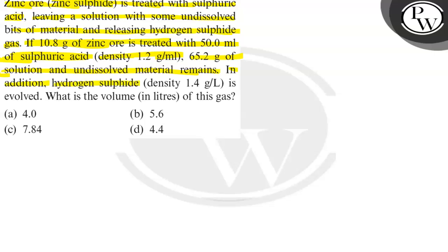The density and volume of sulfuric acid are given. Then 65.2 grams of solution and undissolved material remains. In addition, hydrogen sulfide is evolved. The density is given. Volume is given.